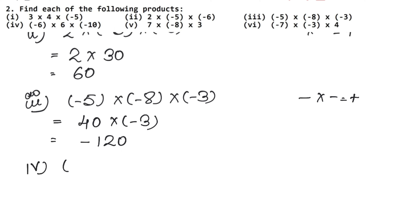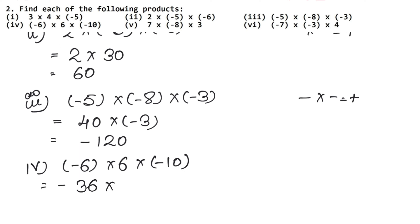The next part is: minus 6 multiplied by 6 multiplied by minus 10. Let's multiply the first two: minus into plus gives minus, and 6 × 6 = 36. So we get minus 36 into minus 10. Minus into minus is plus, and 36 × 10 = 360. We don't need to write plus, so the answer is 360.